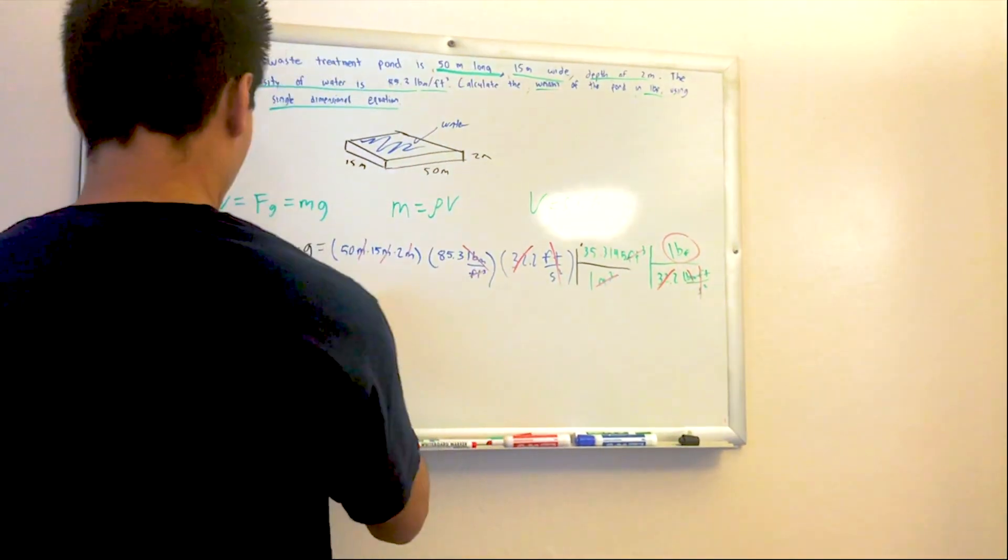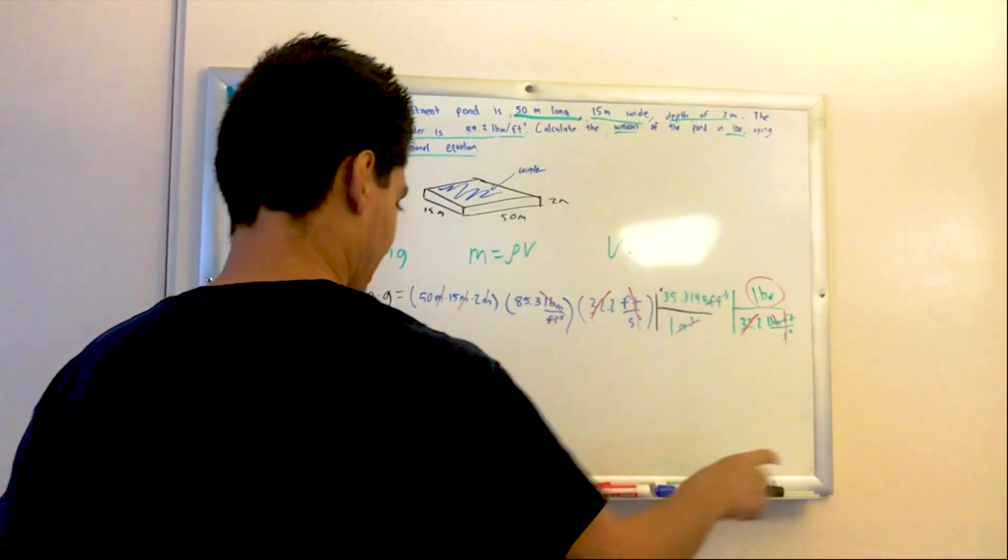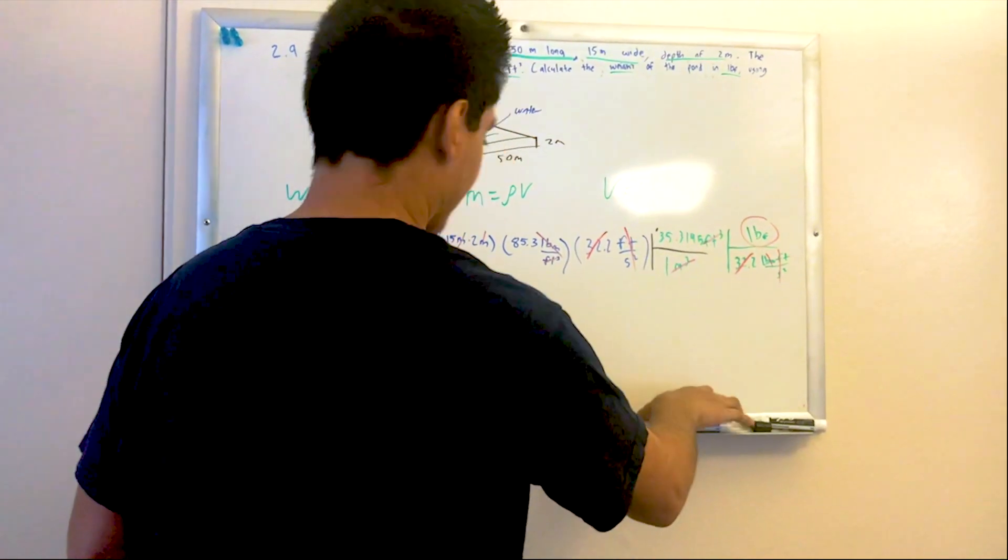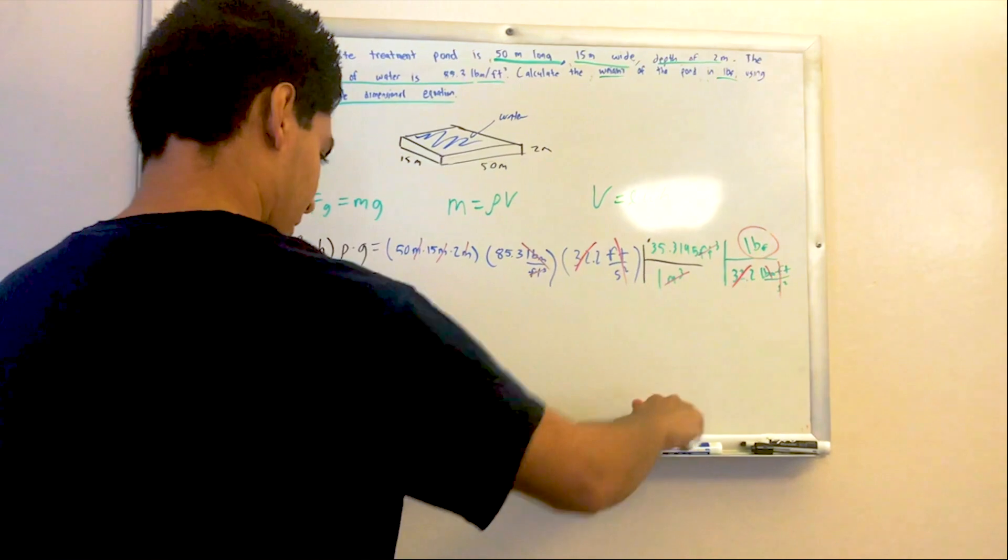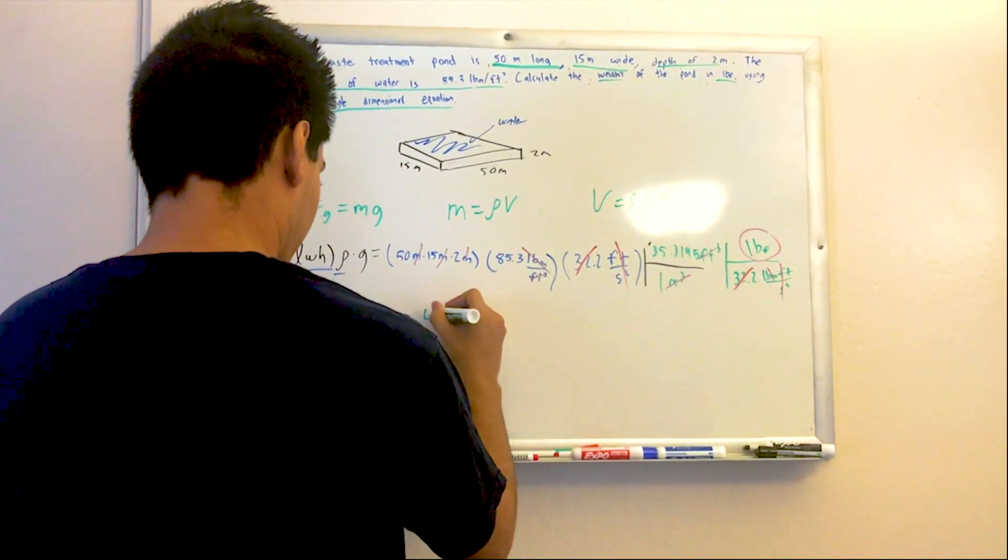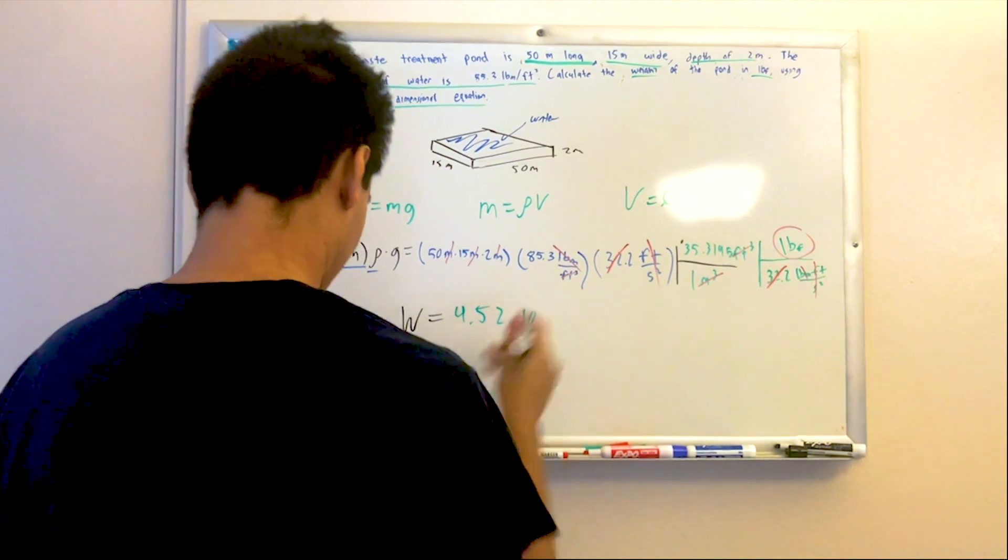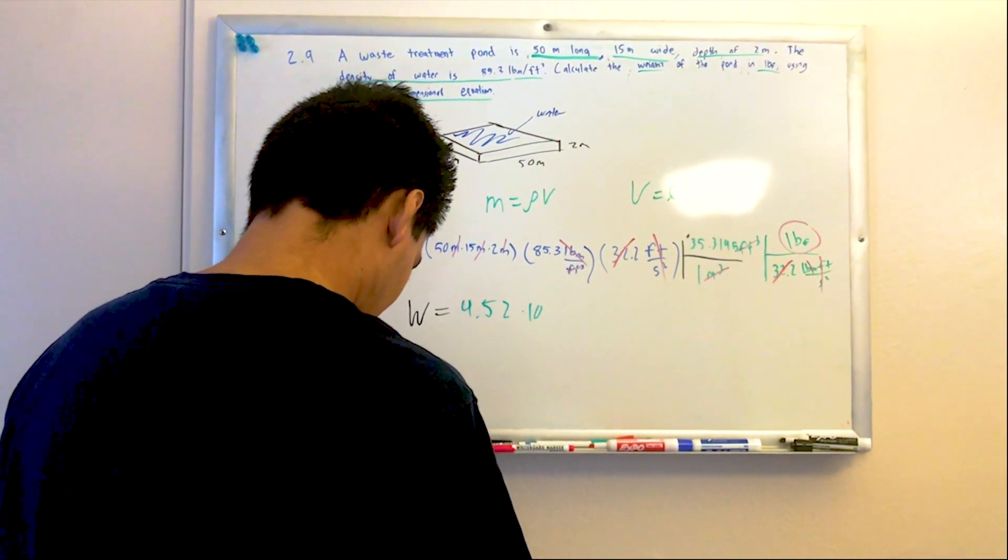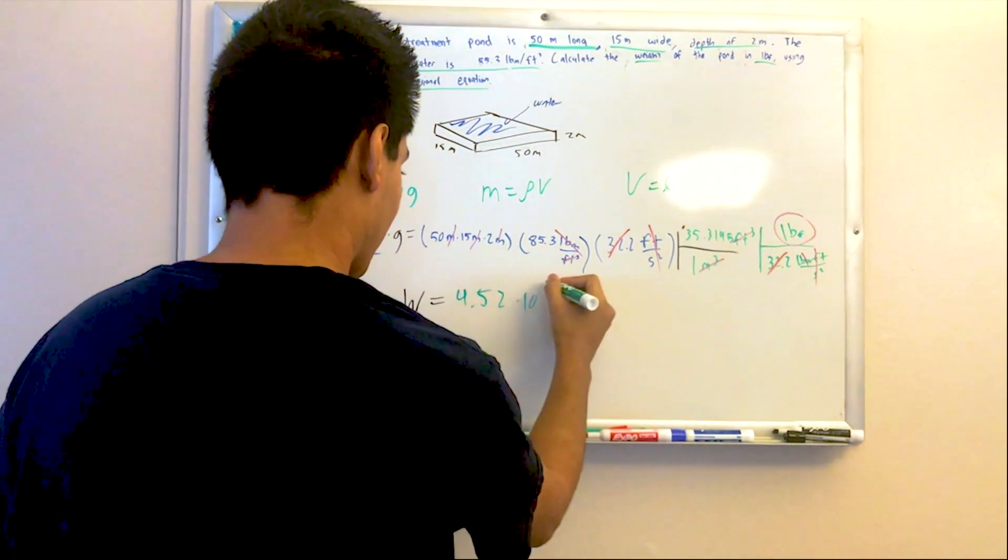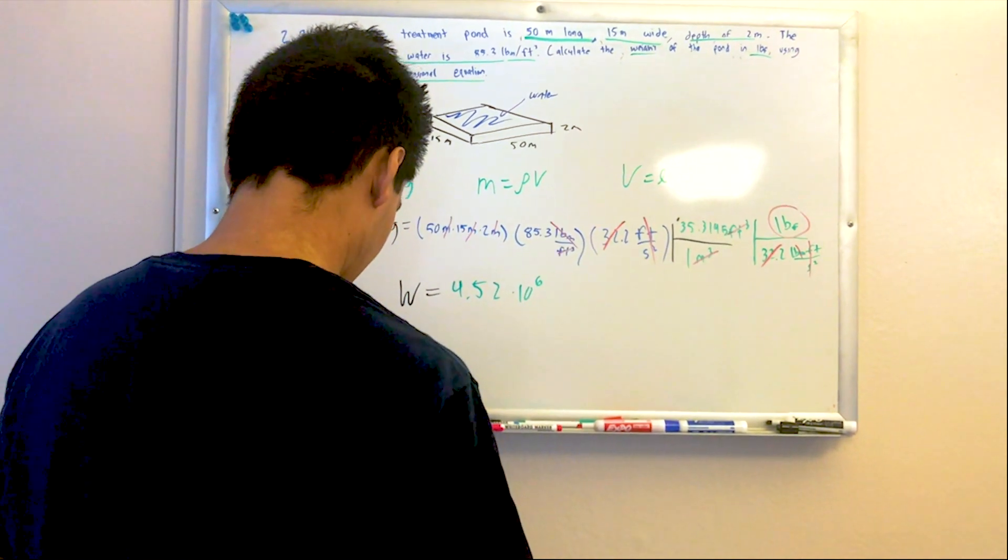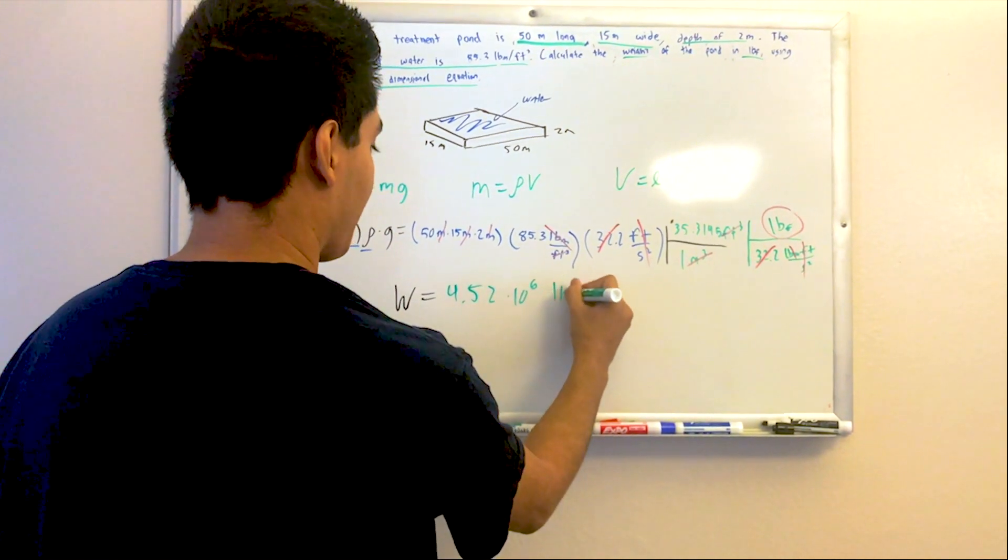4.5 times 10 to the—what is that? 1, 2, 3, 4, 5, 6—times 10 to the 6. That's going to be in pounds force.